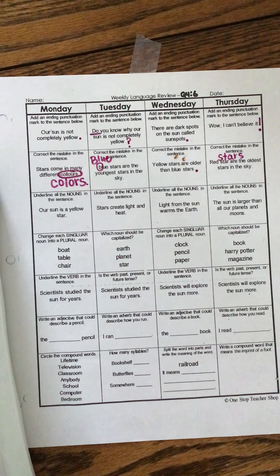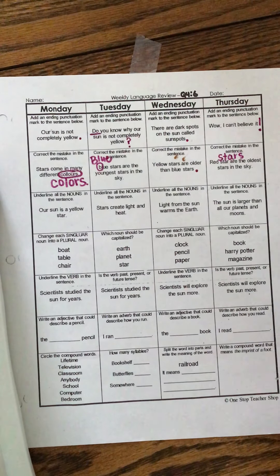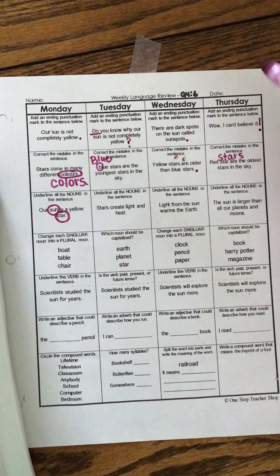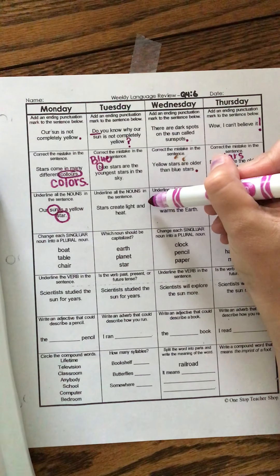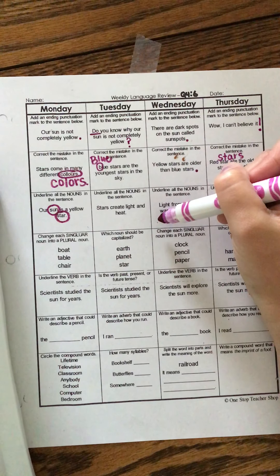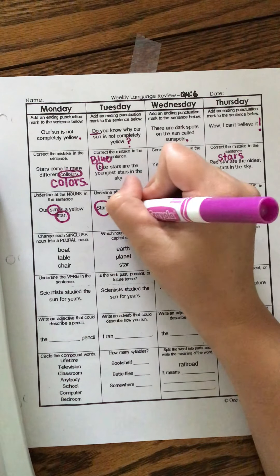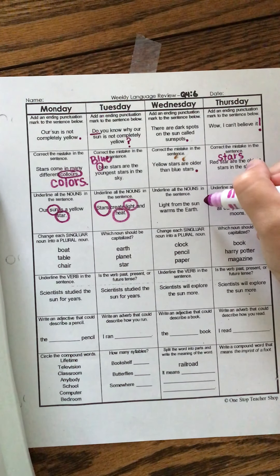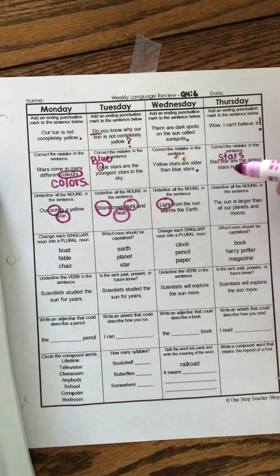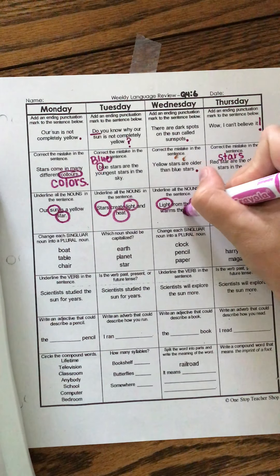Underline all the nouns in the sentence. Our sun is a yellow star. Your hint is there are two. Okay. So the sun is a noun and the star is a noun. Underline all the nouns in this sentence. Stars create light and heat. Your hint. There are three. Stars are a thing. Light is a thing. And heat is a thing. Underline all the nouns in the sentence. Light from the sun warms the earth. Light in this sentence in this context is a noun. The sun is a noun and earth is a noun.